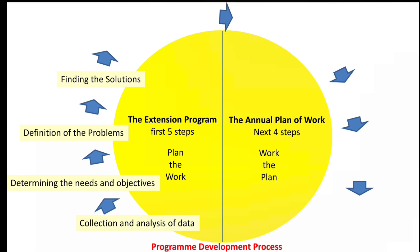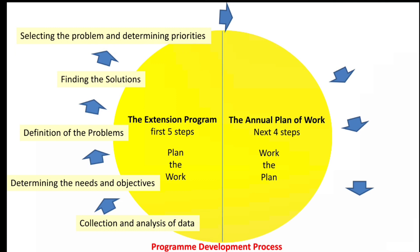Next, we need to prioritize the problems to treat. That means out of problems like problematic soils, more cost of cultivation, farmer illiteracy, or no marketing intelligence, based on severity, we have to deal with the most critical problem first — for example, the more cost of cultivation problem.